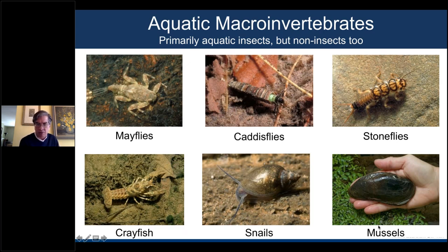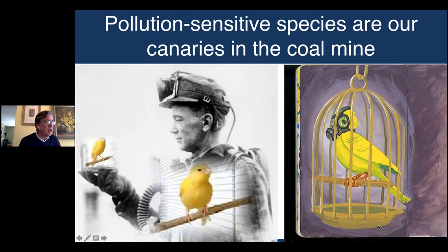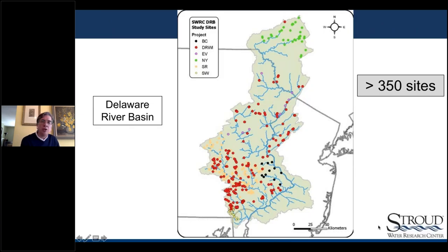We also have crayfish, snails, mussels, and worms — all of those invertebrates would be included in our sampling protocol. We focus on the pollution-sensitive species: the mayflies, stoneflies, and caddisflies — the EPTs — because they are a very important indicator of pollution. They really are canaries. Every state in the union, every developed country, and most of the developing world are using aquatic macroinvertebrates as their primary stream assessment tool.